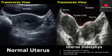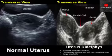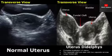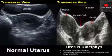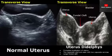In uterus didelphys, we see two separate uteri with two separate endometrial canals with no connection between them. There will also be a large fundal cleft at this location, which is seen better on a 3D ultrasound coronal image.